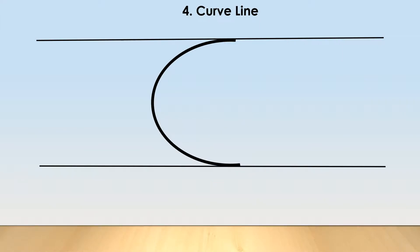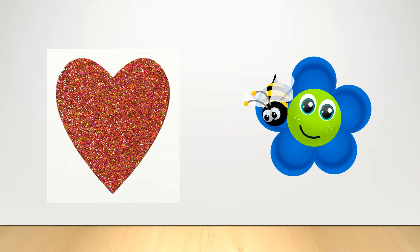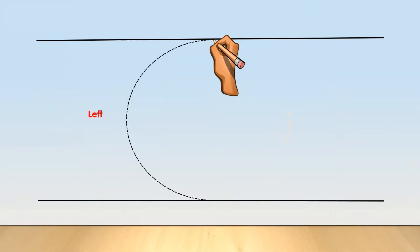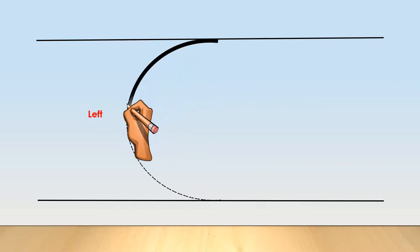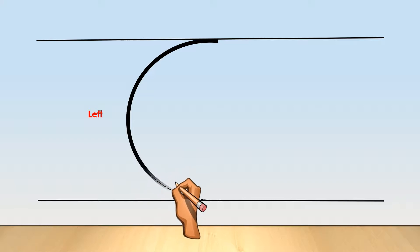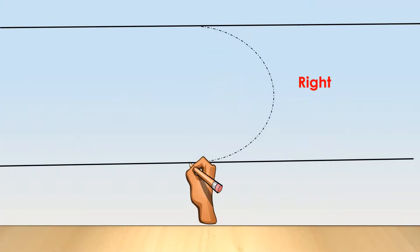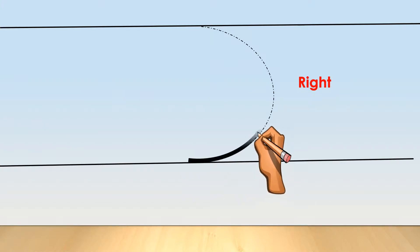The fourth shape is a curved line. Can you find the curves in the given pictures? Yes! The first picture has two curves, and in the second picture there are five curves. Let's see how to draw a curve. The curve line can be drawn four ways. This is curve to the left.